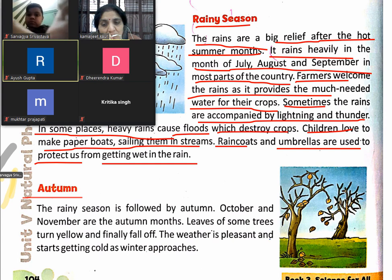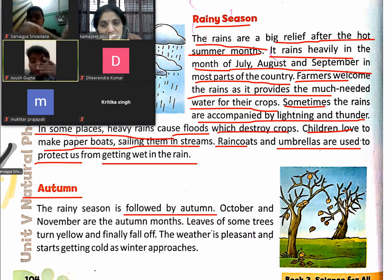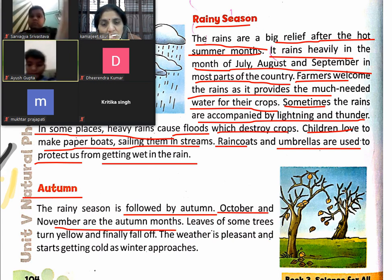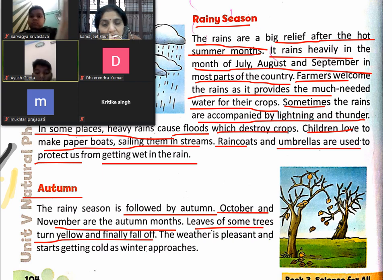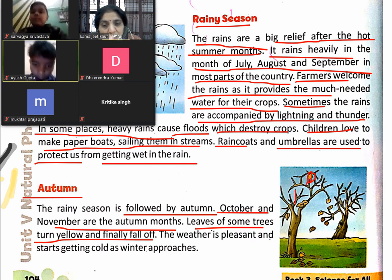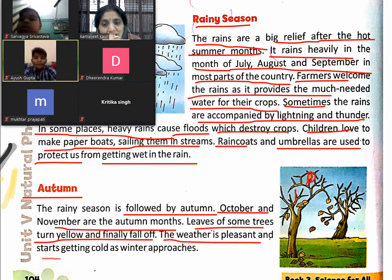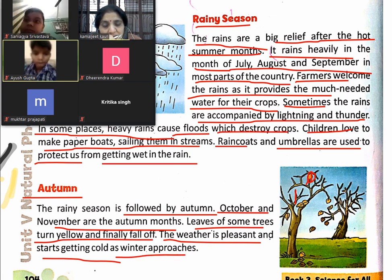After rainy season, autumn has come. The rainy season is followed by autumn. October and November are autumn months. Leaves of some trees turn yellow and finally fall off. The weather is pleasant but starts getting cold as winter approaches.